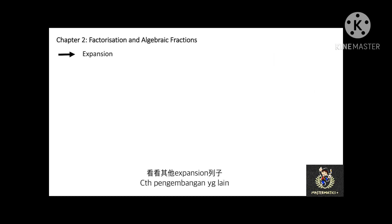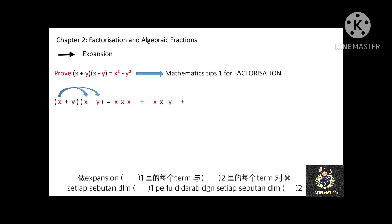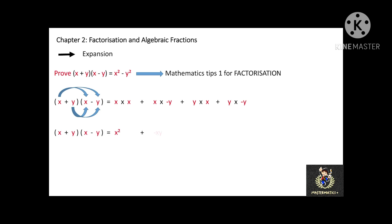Next, can you prove that (x plus y) multiplied with (x minus y) equals x squared minus y squared? Please mark this as Mathematics Tips 1, because you will use it for factorization in the next topic. To expand the two brackets, each term in the first bracket is multiplied with each term in the second bracket. The negative xy and the positive yx cancel out each other, so the answer equals x squared minus y squared.